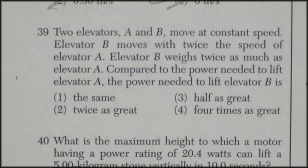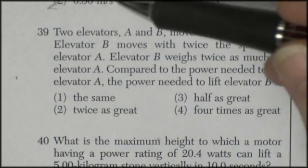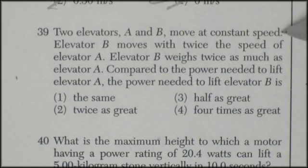So question 39. Two elevators, A and B, moving at a constant speed. Elevator moves with twice the speed of elevator. Two elevators, A and B, moving at constant speed.